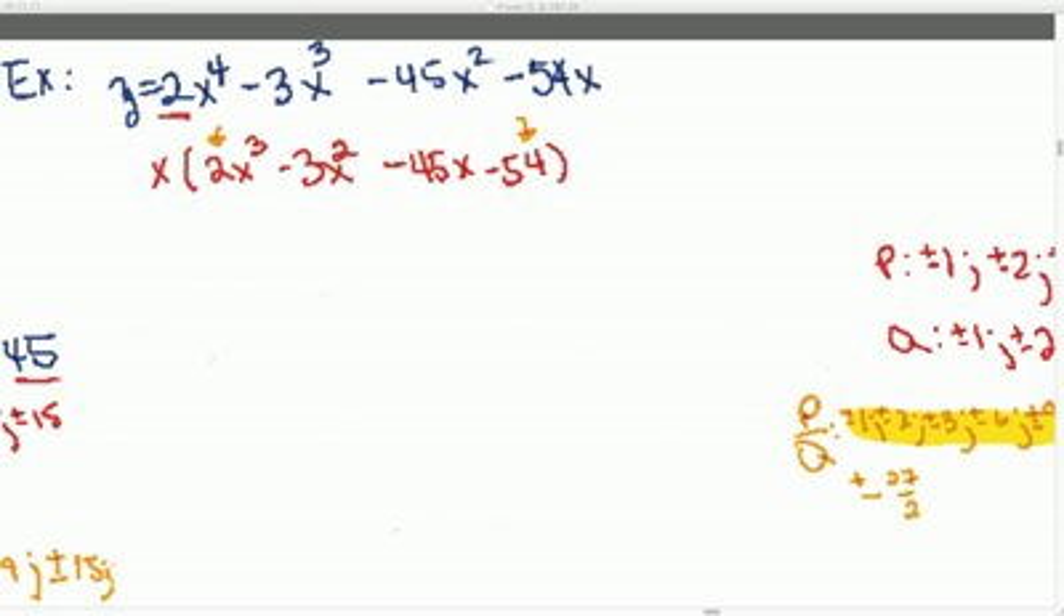So then after that, what you do is you can either use the factor theorem and start plugging in your stuff just to make sure it's a root, or you can do synthetic division until you get 0 as a remainder. So I prefer the synthetic division method. Again, let me just show it to you in action.